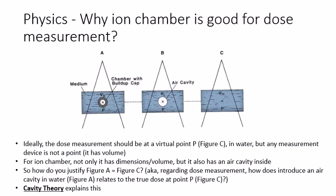Let's think a little bit more about why an ion chamber is good for dose measurement. Ideally the dose measurement should happen at a virtual point P, for example in this figure C here.